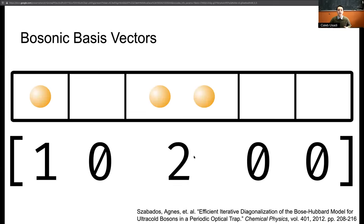Bosonic basis vectors don't have this intuitive binary representation because you don't have the restriction of zeros and ones. Traditionally these systems are represented as arrays of integers where you have one 64-bit integer for each site which means that there's an additional scaling factor of the number of sites in the system.